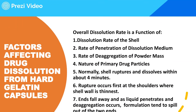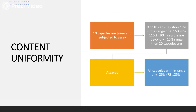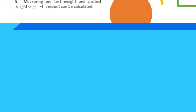For content uniformity, 10 capsules are taken and subjected to assay. Nine of the 10 capsules should be within ±15% — that is, content should lie between 85% and 115%. If only one capsule is outside this range, an additional 20 capsules are assayed. All 30 capsules combined should then be within ±25% — meaning no capsule should fall outside 75% to 125%. This criteria is the same as used for tablets.